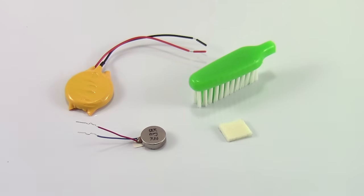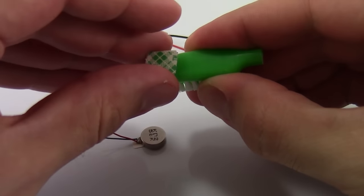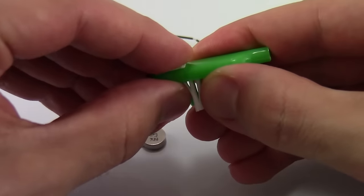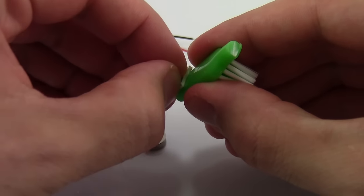To build your robot, first take a piece of double-sided foam tape and place it on the top of one end of the toothbrush. Press down firmly and then peel off the paper backing.